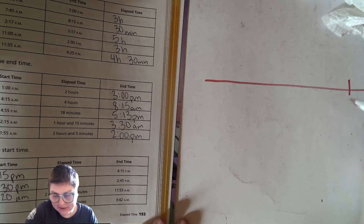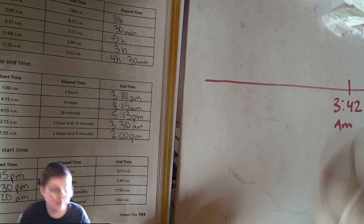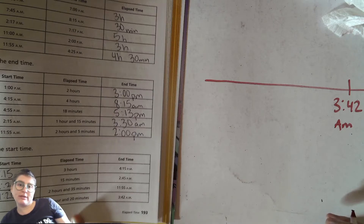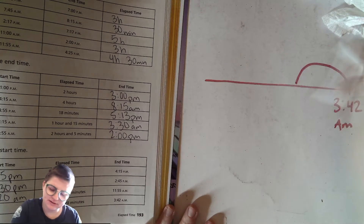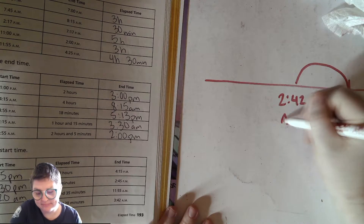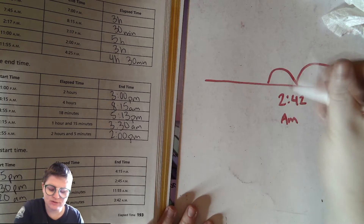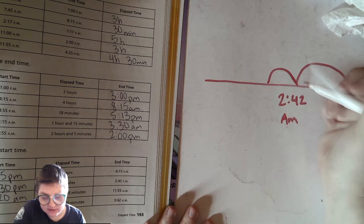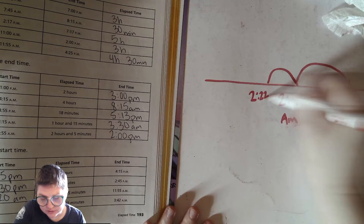If we're ending something at 3:42 AM and trying to go back one hour and 20 minutes: hop back one hour, that's 2:42. Then hop back 20 minutes — subtract 20 from the minutes — and you're left with 2:22 AM.